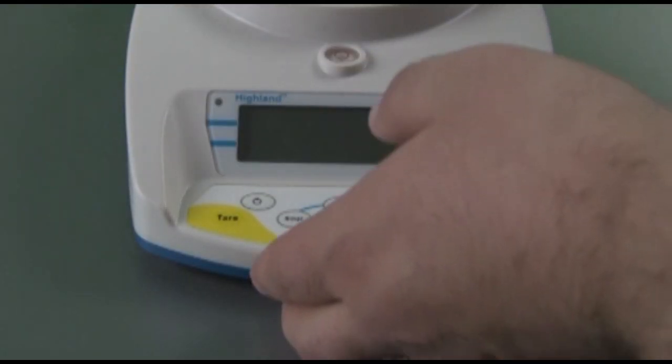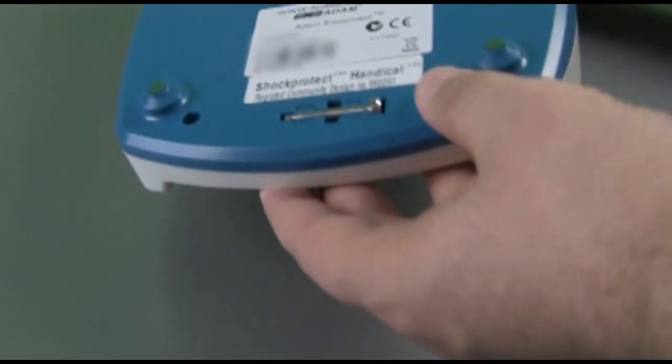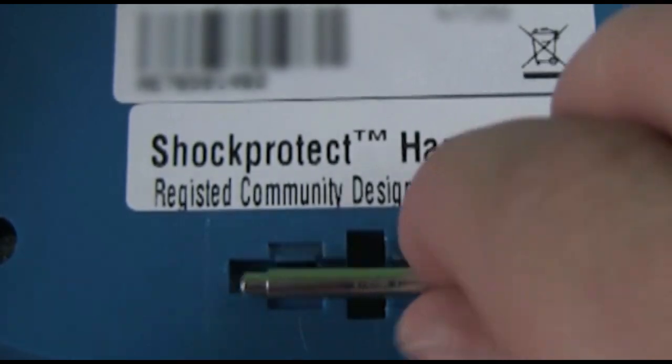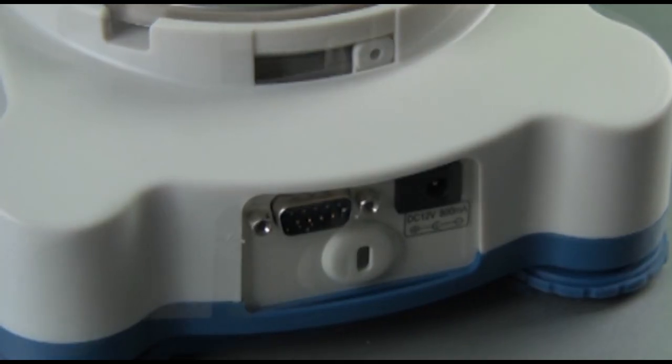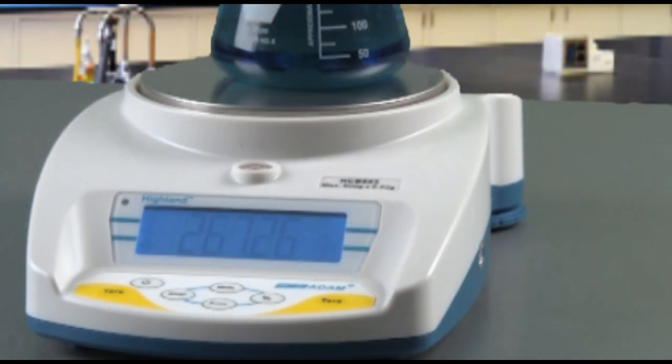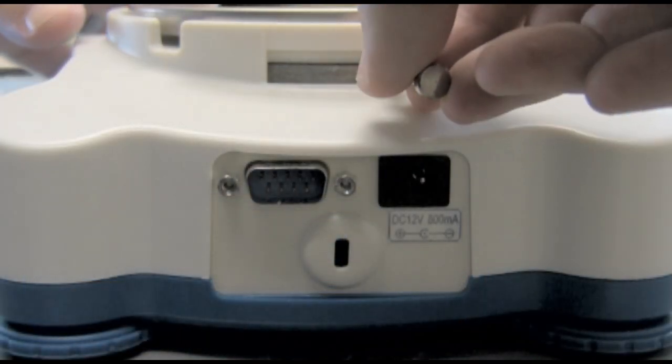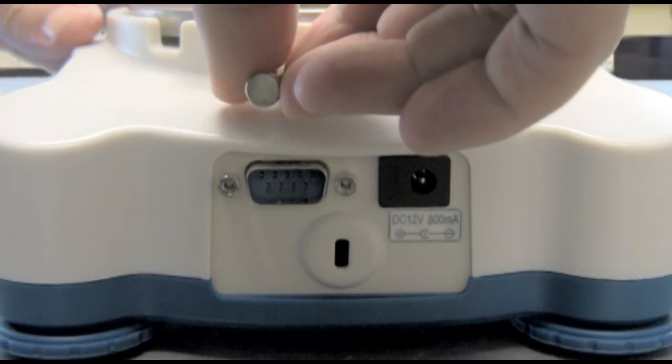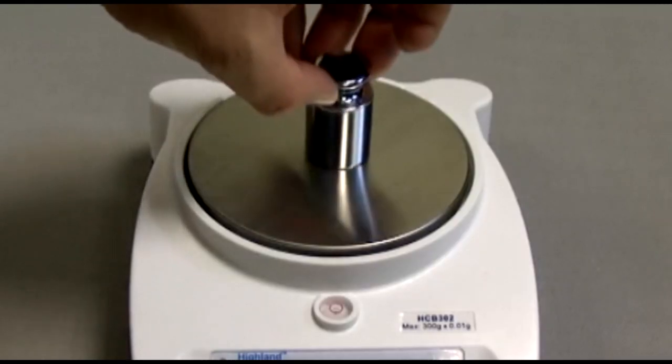One of the reasons the Highland is such an excellent choice for education settings is HandyCal, Adam's patented calibration feature. Incorporated directly into each Highland, HandyCal eliminates the need for external weights. Simply move the calibration lever to activate the mass, or you can choose to calibrate with external weights.